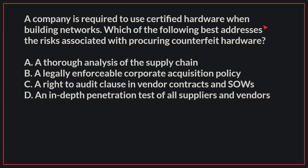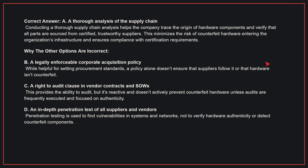A company is required to use certified hardware when building networks. Which of the following best addresses the risks associated with procuring counterfeit hardware? The correct answer is A: A thorough analysis of the supply chain. Conducting a thorough supply chain analysis helps the company trace the origin of hardware components and verify that all parts are sourced from certified, trustworthy suppliers, minimizing the risk of counterfeit hardware.